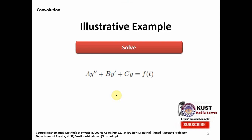Let's solve a second order linear differential equation. You can see the first term is a·y'' where a is some constant, the second term is b·y', and c·y equals f(t) — the right hand side is not zero but some function of time. This equation can be solved in various ways, but here we solve it with the help of Laplace transform. We are also given initial conditions: y(0) and y'(0) are equal to zero.